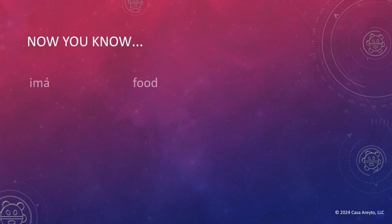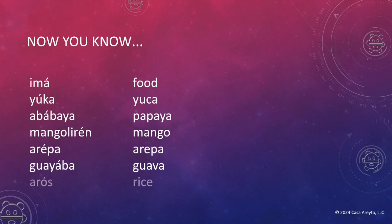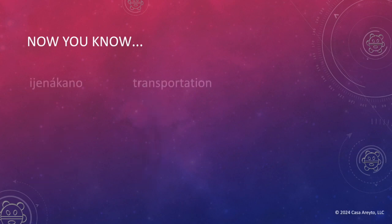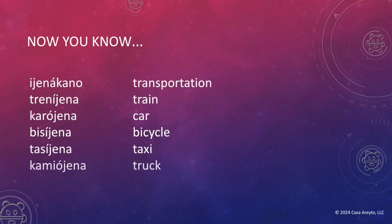Ima — food. Yucca — yucca. Ababaya — papaya. Mangolirin — mango. Arepa — arepa. Guayaba — guava. Arroz — rice. Ihenacano — transportation. Trenigena — train. Karohena — car. Visigena — bicycle. Tassigena — taxi. Kamiohena — truck. Motorahena — motorcycle.